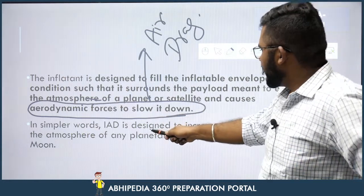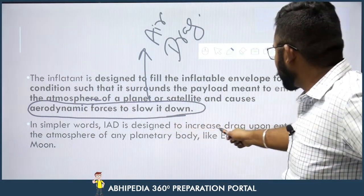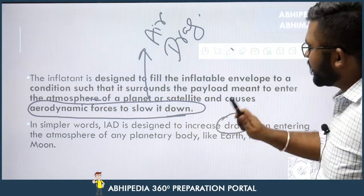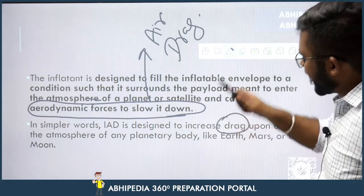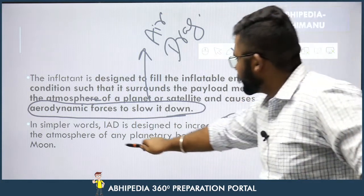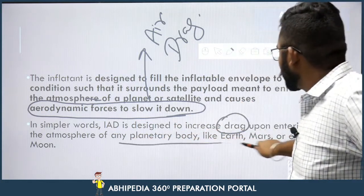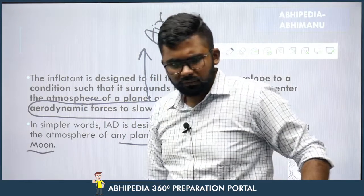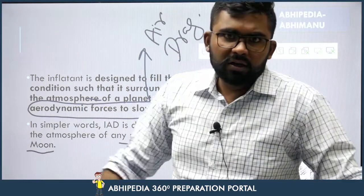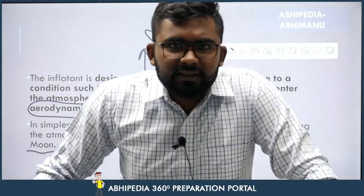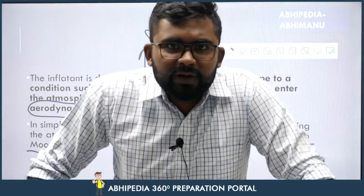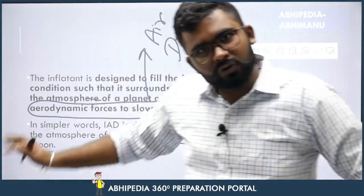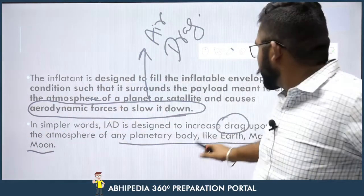In simpler words, IAD is designed to increase drag upon entering the atmosphere of any planetary body — like Earth, Mars, or even Moon. However thin the atmosphere may be, atmosphere is still there, toh us concept ko use karte huay IAD kaam karta hai.